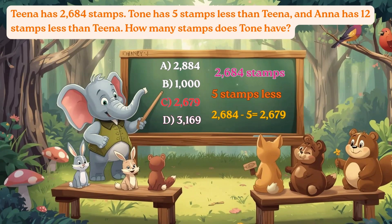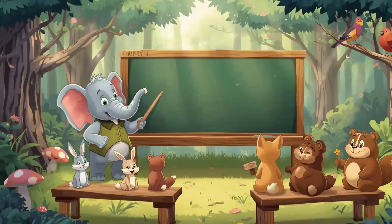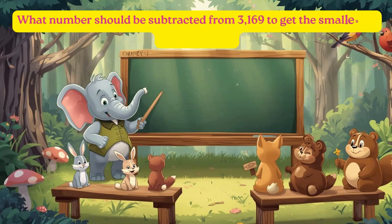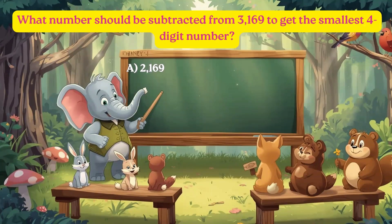Let's see the next one. One number should be subtracted from 3,169 to get the smallest 4-digit number. Options are A: 2,169. B: 1,000. C: 2,000. D: 3,169.